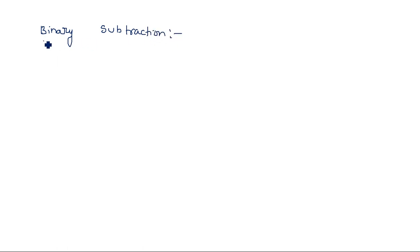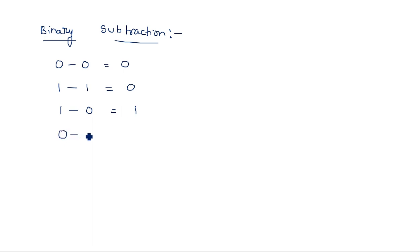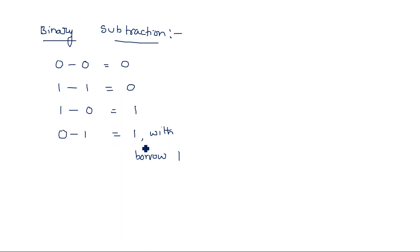Coming to binary subtraction: 0 minus 0 is 0, 1 minus 1 is 0, 1 minus 0 is 1 — these are normal. But 0 minus 1 gives result 1 with a borrow of 1. Except for 0 minus 1, all three other cases are straightforward. The key rule is that 0 minus 1 produces 1 with borrow 1.